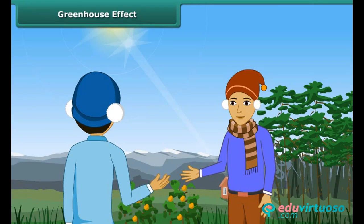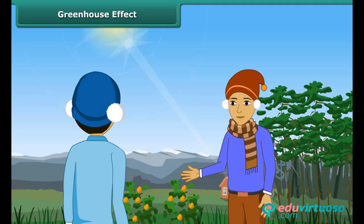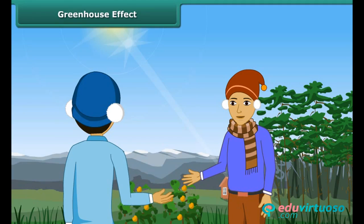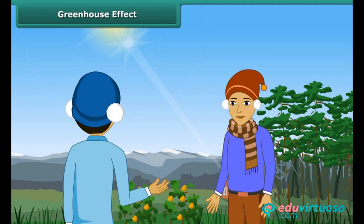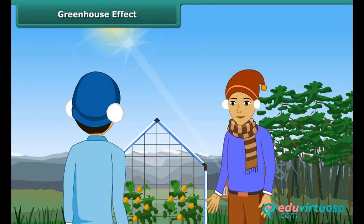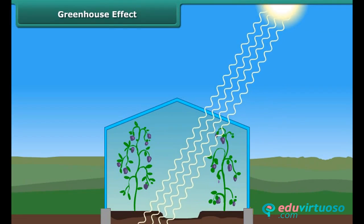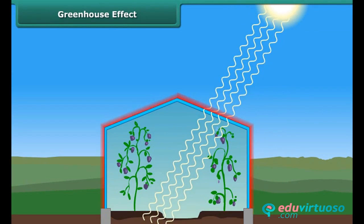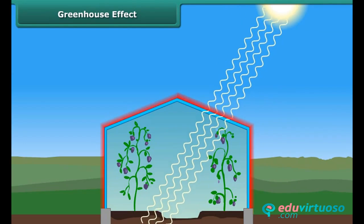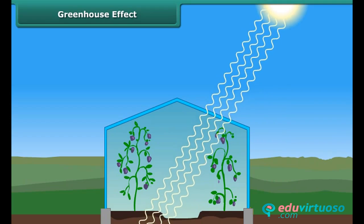We can use the greenhouse effect to protect plants from extreme cold. See this house — it has so many glass panes and is called a greenhouse. When solar rays come into this house, they heat up the air inside it. That hot air is trapped inside, which makes a nice, warm, and humid environment for plants to grow.